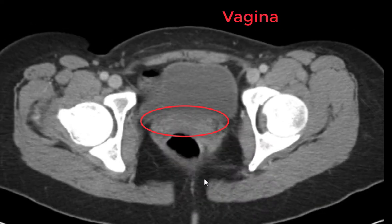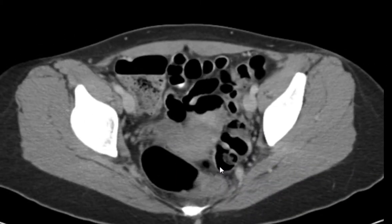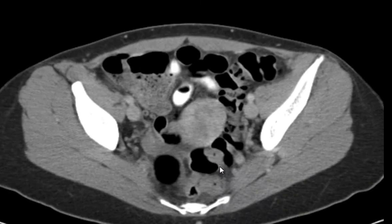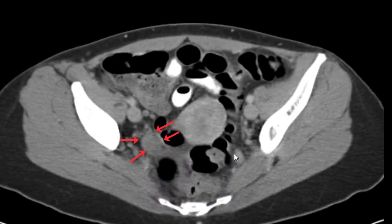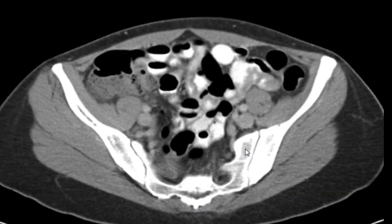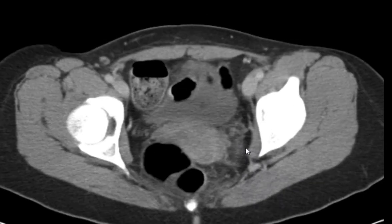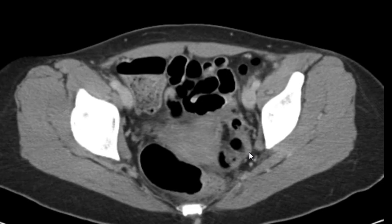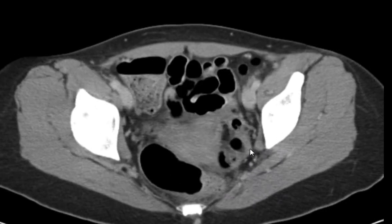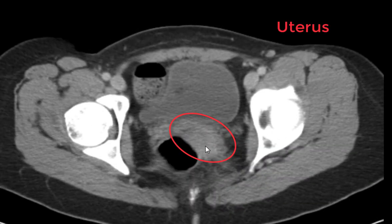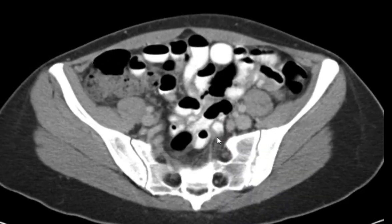The female organs — we see the vagina down here, probably a right ovary here, maybe a left ovary down here, and here's the uterus. All looks pretty normal.